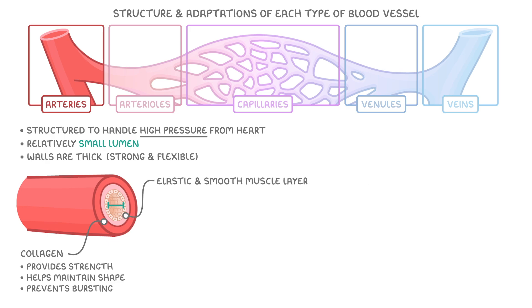The walls also have a thick elastic and smooth muscle layer. Both parts of this layer are important. The elastic fibers let the arteries stretch as blood pulses through and then recoil, which helps maintain a constant pressure in the artery.